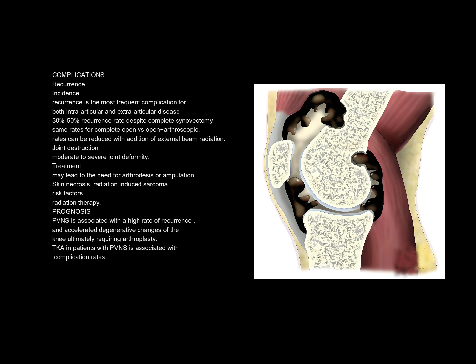Joint destruction with moderate to severe deformity may lead to the need for arthrodesis or amputation. Additional complications include skin necrosis and radiation-induced sarcoma as a risk factor of radiation therapy. Prognosis: PVNS is associated with a high rate of recurrence and accelerated degenerative changes of the knee, ultimately requiring arthroplasty. Total knee arthroplasty in patients with PVNS is associated with elevated complication rates.